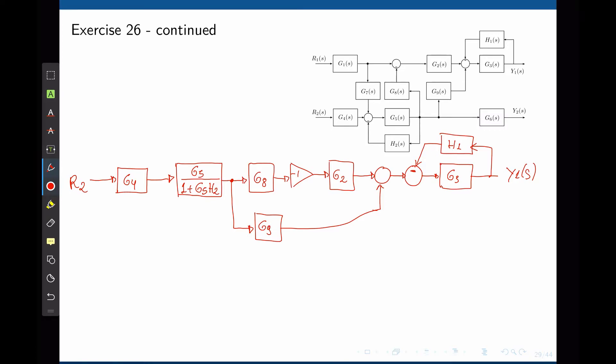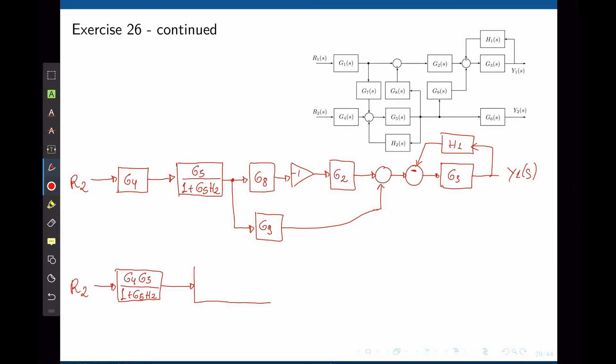Now things look a lot easier to simplify. The first two blocks can be multiplied together. We have R2 that now multiplies G4 and G5. The output here feeds G8, negative 1, and G2. They can simply be multiplied together, so negative G2, G8.